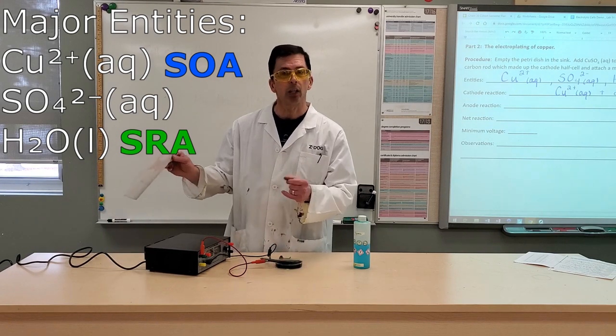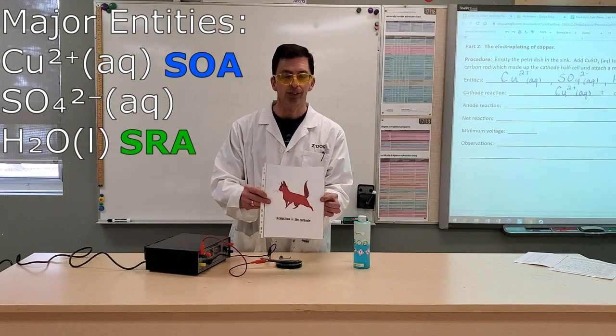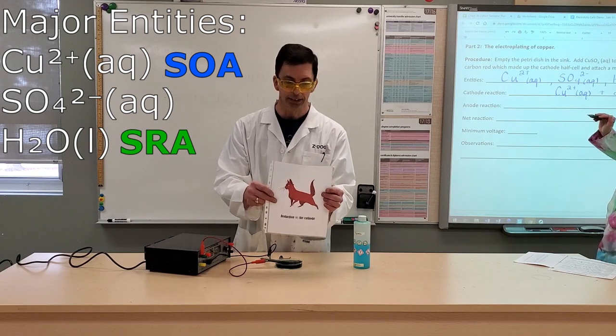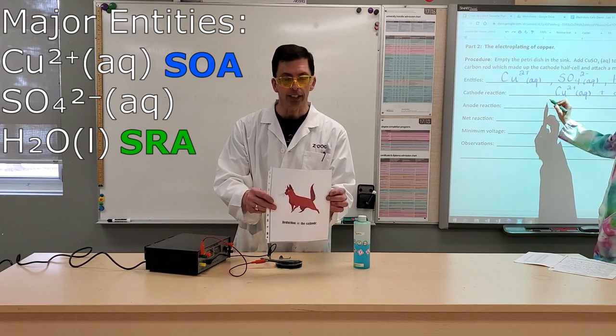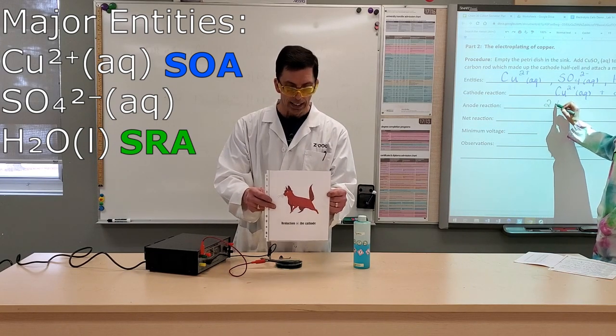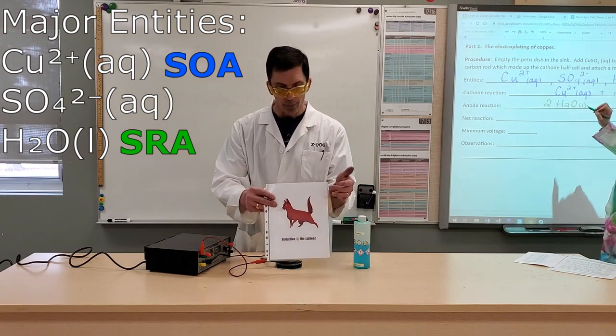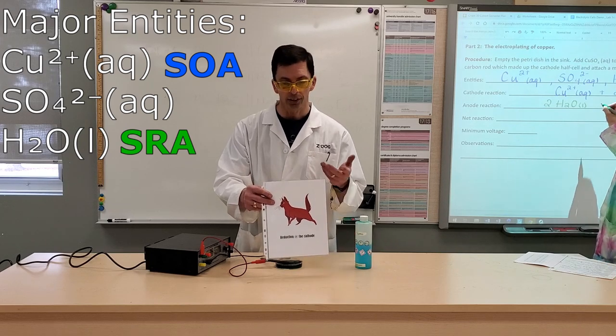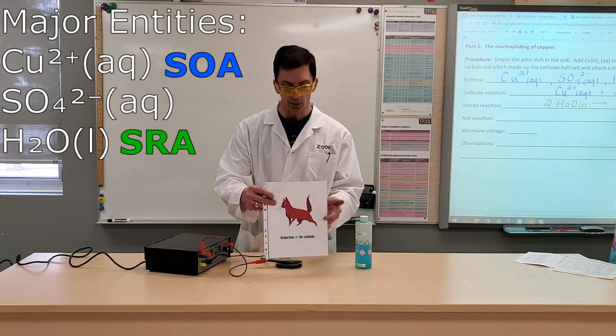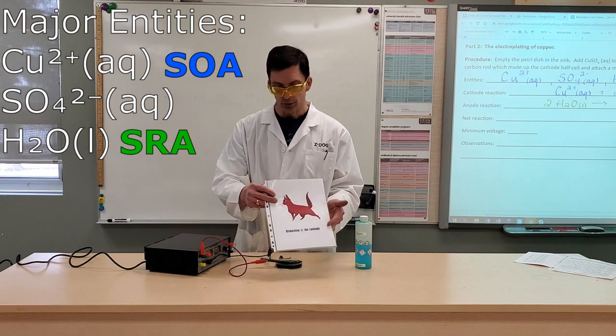And remember, whether it's a voltaic cell or an electrolytic cell, reduction occurs at the cathode. And here we have Z-Dog's Ruby the Red Cat, she's part of Z-Dog's gang, reminding you that reduction occurs at the cathode, whether it's a voltaic or an electrolytic cell.